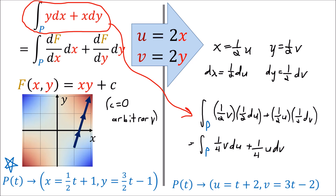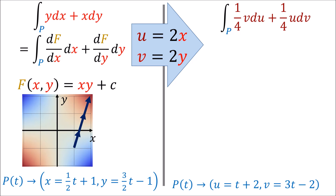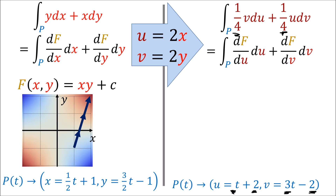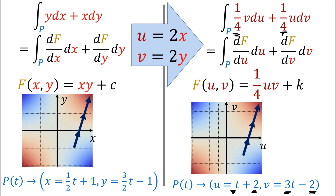We also re-parametrize the path in terms of u and v, giving u equals t plus 2 and v equals 3t minus 2. You'll notice that the numbers in the covector field got smaller but the numbers in the path got bigger — these effects cancel so the result stays the same. Looking for the underlying function f, we find f(u,v) equals one-quarter u times v plus some constant k. Visualizing this scalar field, and the new path in u-v coordinates, they look exactly the same as before.